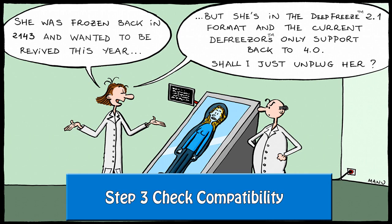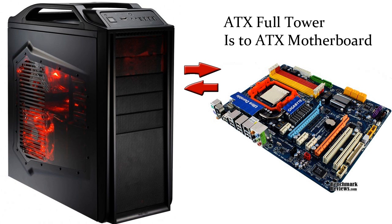The third step is to check compatibility before you buy. I'll provide a general idea on how to check if the pieces are compatible, but always check on forums or with an expert before purchasing. We'll go from the outside in. First, check the case with the motherboard — if the motherboard is a full ATX, meaning not micro, the case has to be an ATX tower.